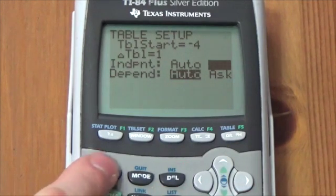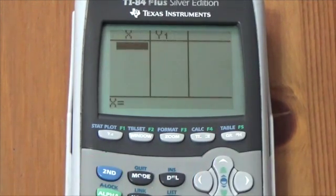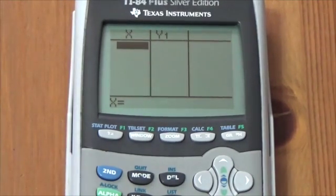So, for example, if I now press second table, there's nothing there. What the calculator is waiting for me to do is to enter the particular x coordinates that I'm interested in.